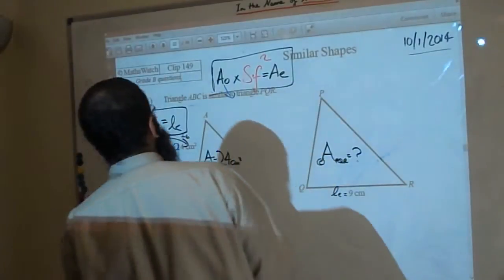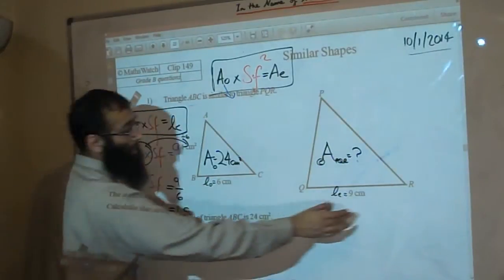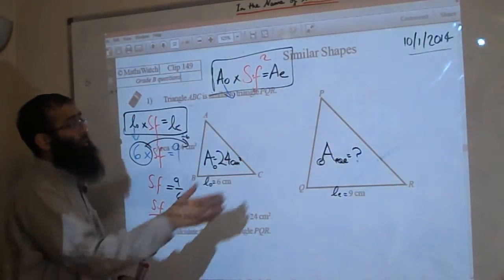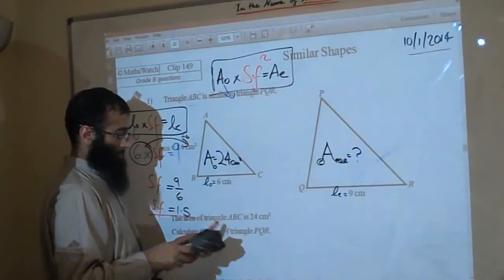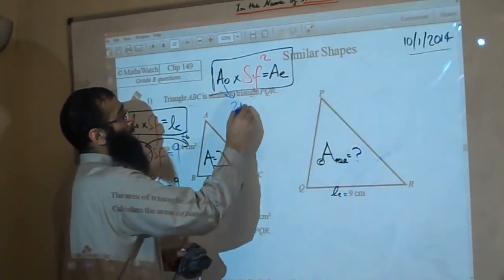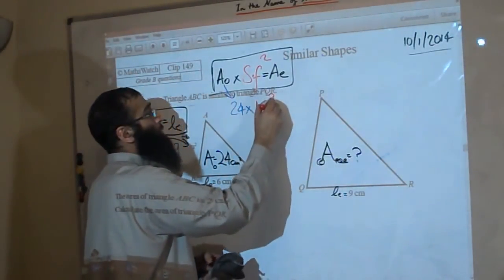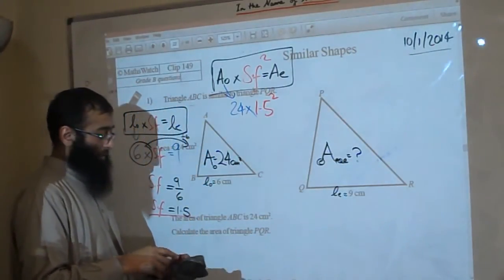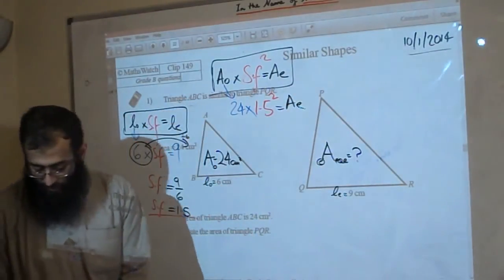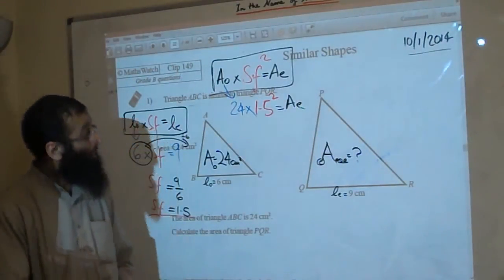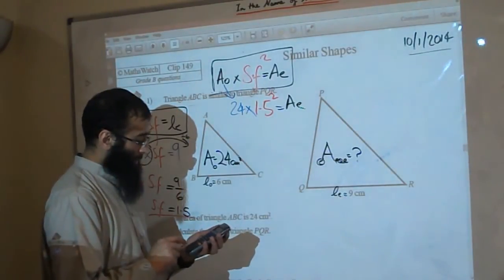Right, this next part of the question. We first of all worked out the scale factor by considering the lengths. Now we are moving back onto the area of this particular question. So we said area of the original which is 24, times by the scale factor squared. The scale factor we just worked out is 1.5, so 1.5 squared, and that will give you the answer for the area enlarged. So we have 24 times by 1.5 squared equals 54.